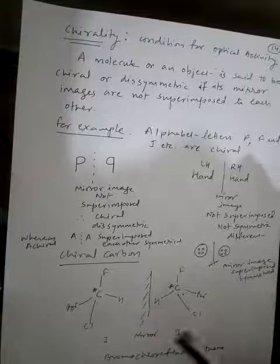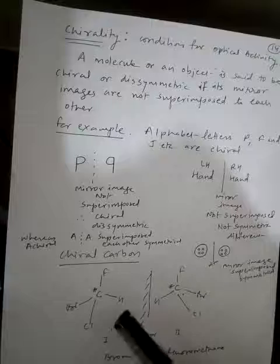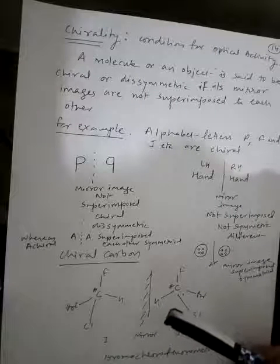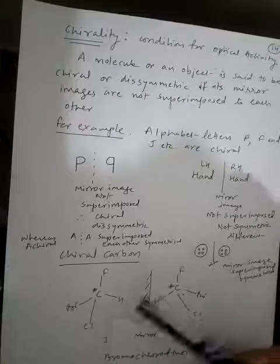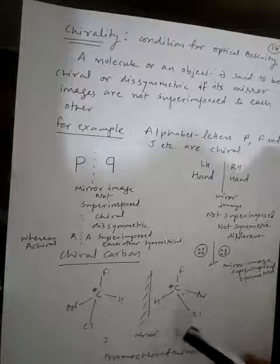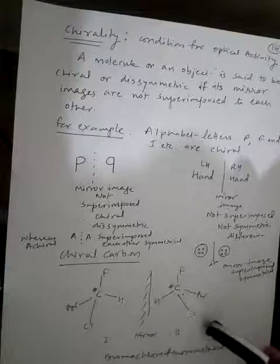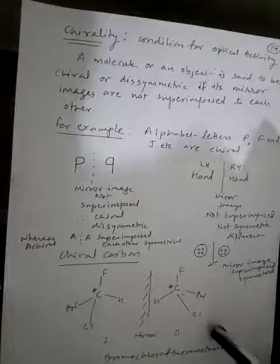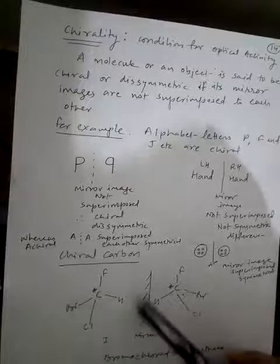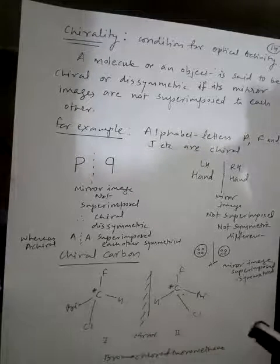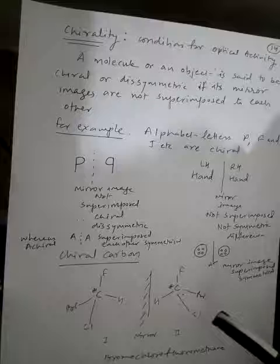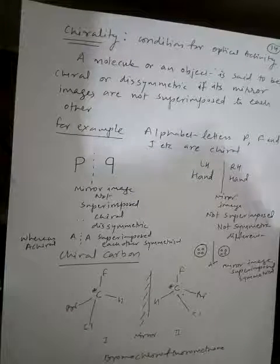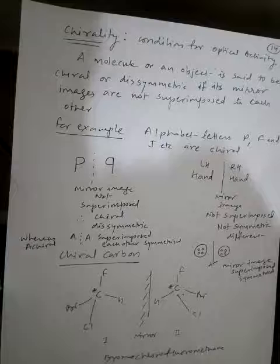Chiral carbon — example: bromochlorofluoromethane. Its mirror image is not superimposable, so this carbon is attached to four different elements. Therefore, it has chirality, making the two forms enantiomers.